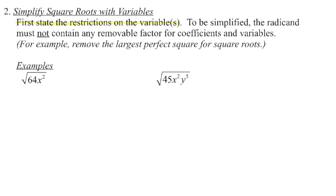In this first example, I can see that we have a square root. Because the index is even — that's a 2 — I know that there could potentially be a restriction. I'm then going to look at the operation. I can see that 64x squared means we're multiplying 64 times x squared. Because we're multiplying, is there any way we can end up with a negative radicand? Because this has an exponent of 2, no matter what x is, if it's negative, when I square it, it becomes positive. So because I have an even exponent on my variable and we are multiplying, there is no way I will get a negative radicand. So my restriction is just that x has to be an element of the real numbers.